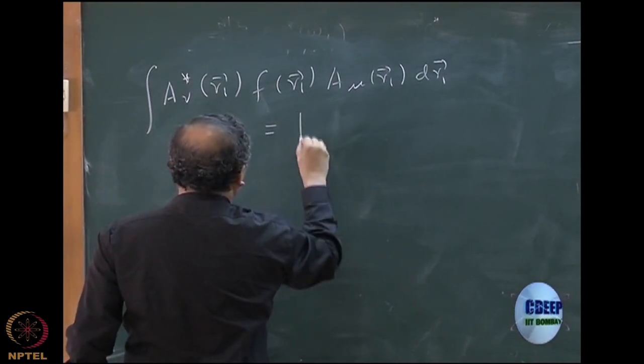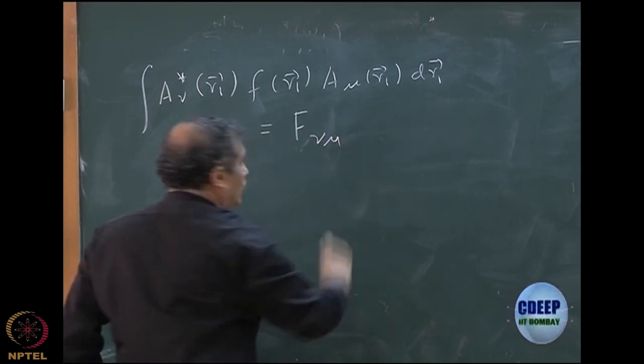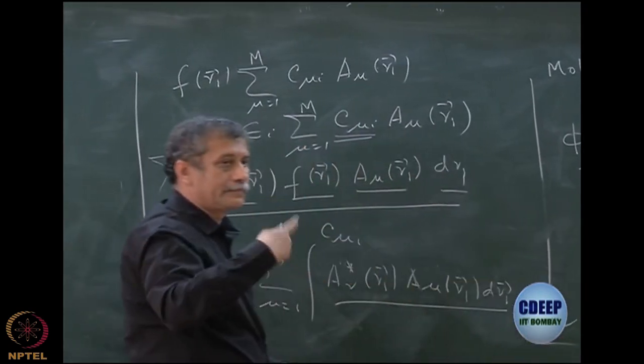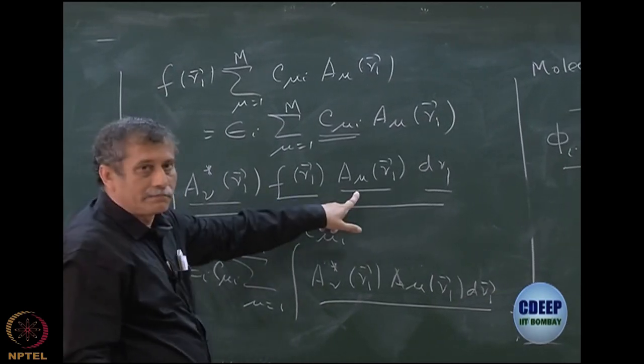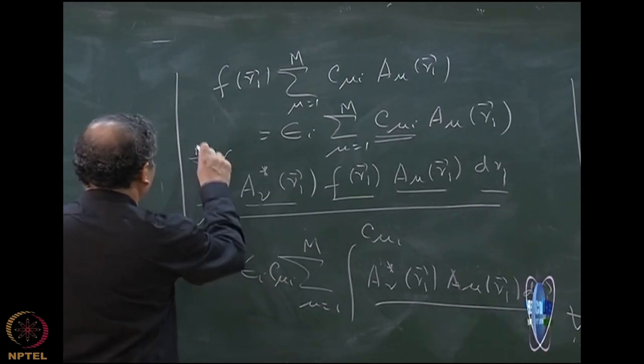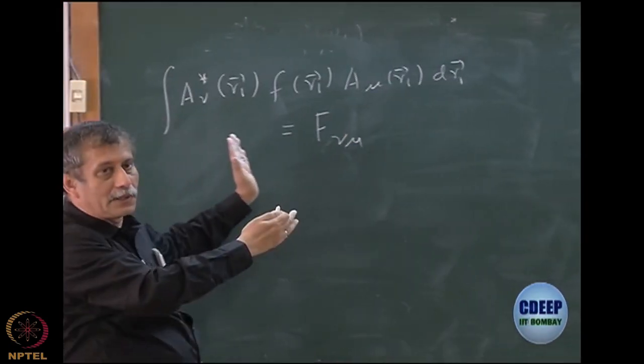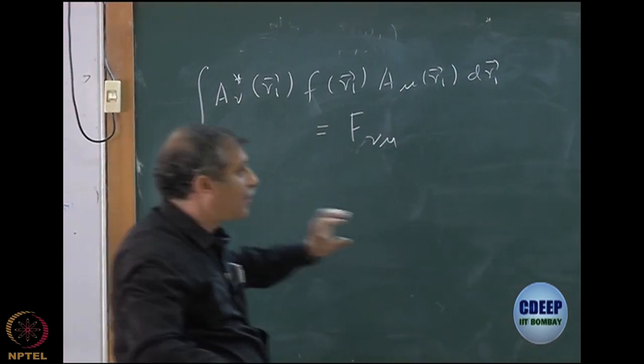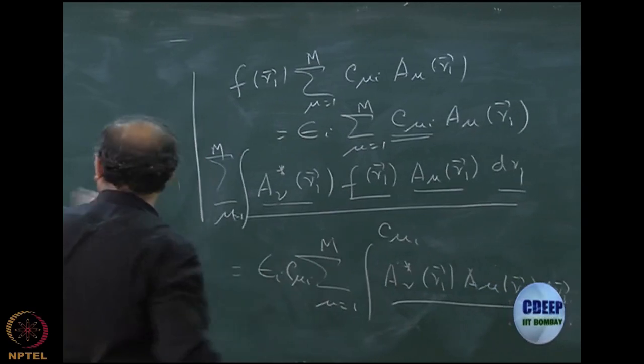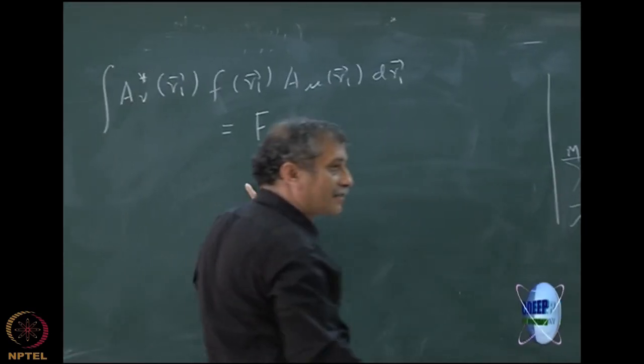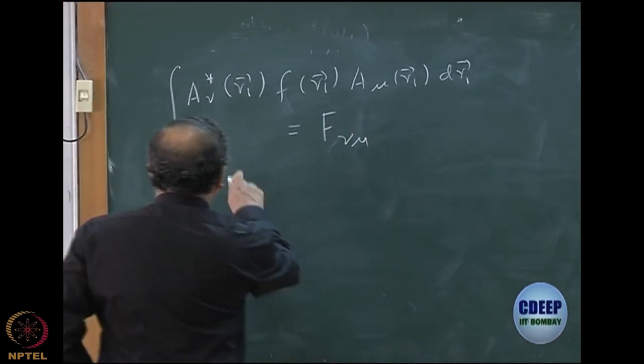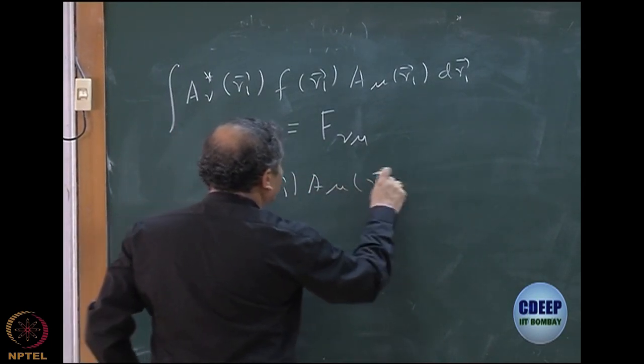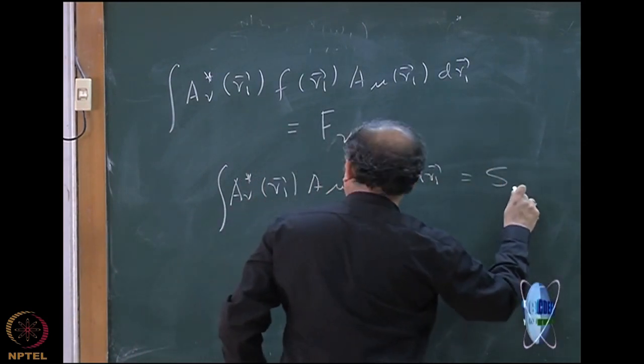What Roothaan and Hall proposed was that all we need to know is these numbers and these numbers. Integrals, remember they are definite integrals, so they will become numbers. This will also become a number. Let me call this number A nu star R1, F of R1, A mu R1, DR1. Let me call this matrix of capital F nu mu. Note that how many numbers I will have. This equation is for all nu, one at a time. So how many nu's are there? M obviously, because this mu is going from 1 to M. So this will become M square in number, which I can rearrange as a matrix. So I am calling it F nu mu matrix, this entire set of numbers. I will write it, I am just calling this matrix, defining the matrix. This is a definition, I am not writing that equation.